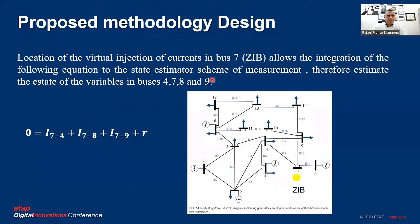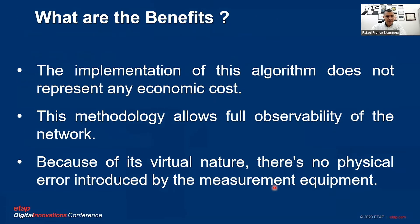The methodology is presented here. In this particular network, bus 7 is a Zero Injection Bus because the input current equals the output current. Therefore, the ZIB is located at bus 7. This is beneficial because this methodology allows full observability of the network with no economic cost, since the virtual nature of ZIBs means no physical measurement equipment is introduced.